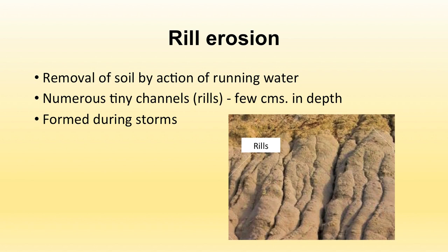Another type is rill erosion. Rills are basically small, thin channels formed on the earth's surface when water flows — during heavy rainfall, water gets transported in very thin channels, like fingers or thinner. These thin channels are known as rills, and through them soil particles are removed by water. Rills can be a few centimeters in depth.